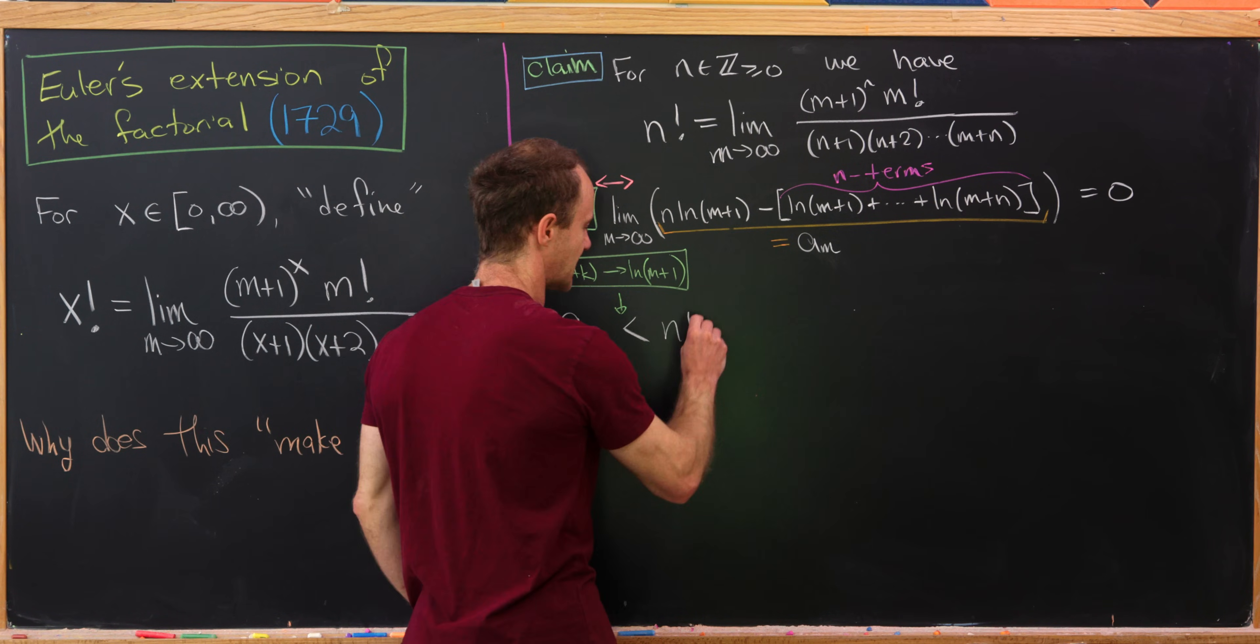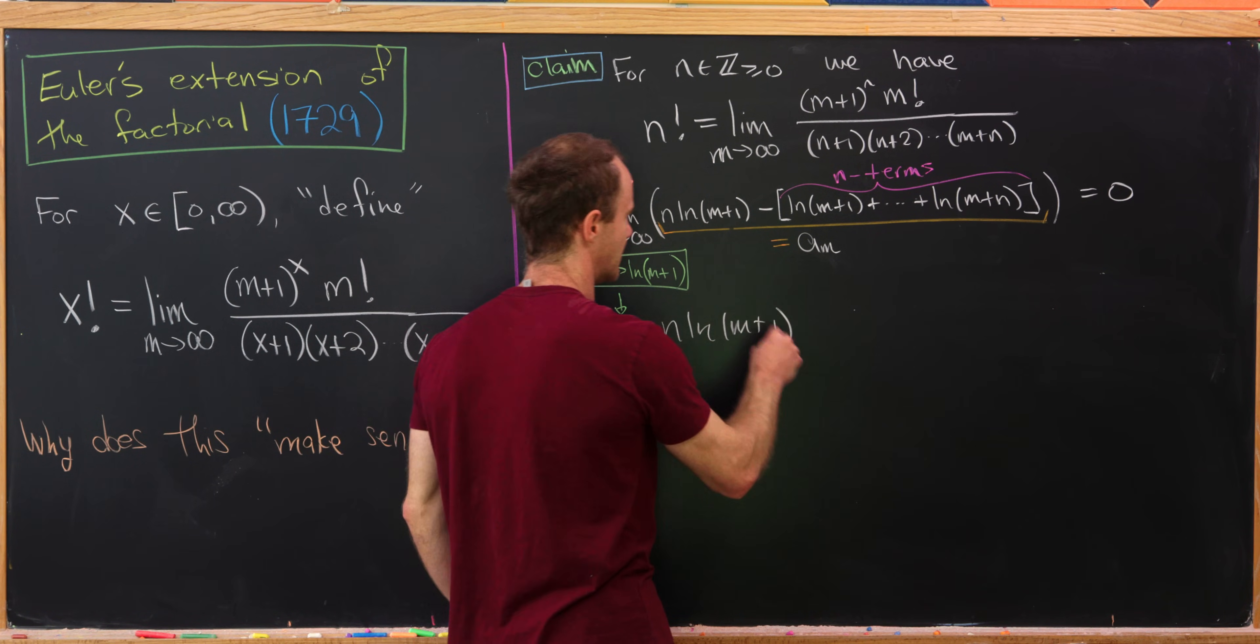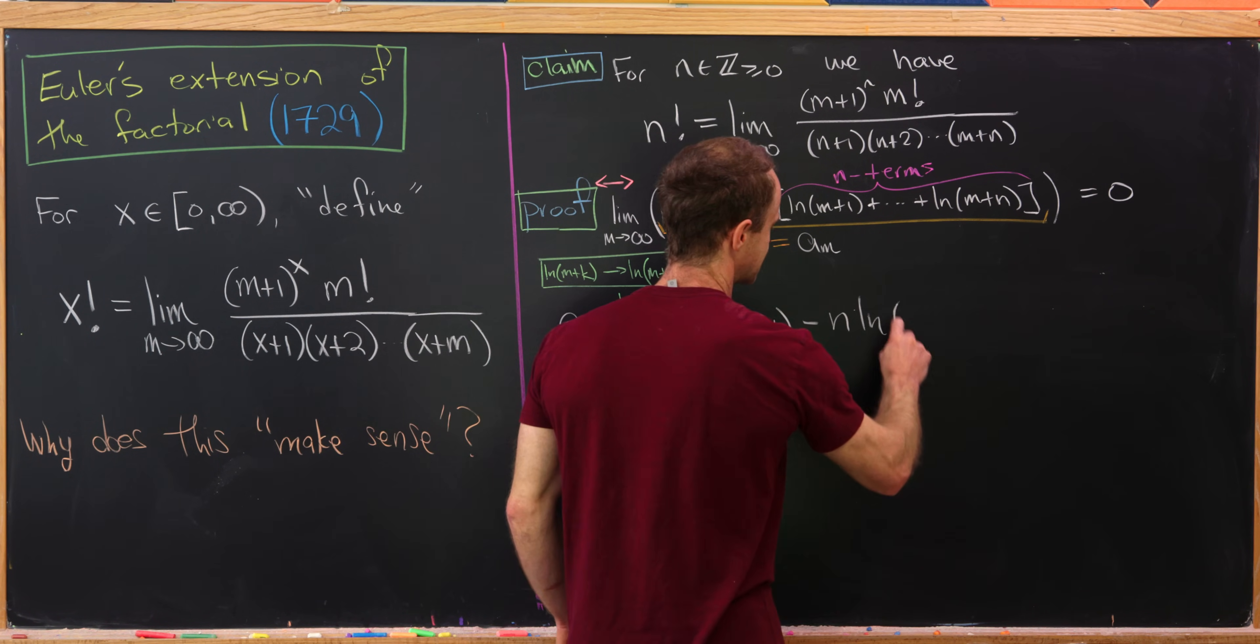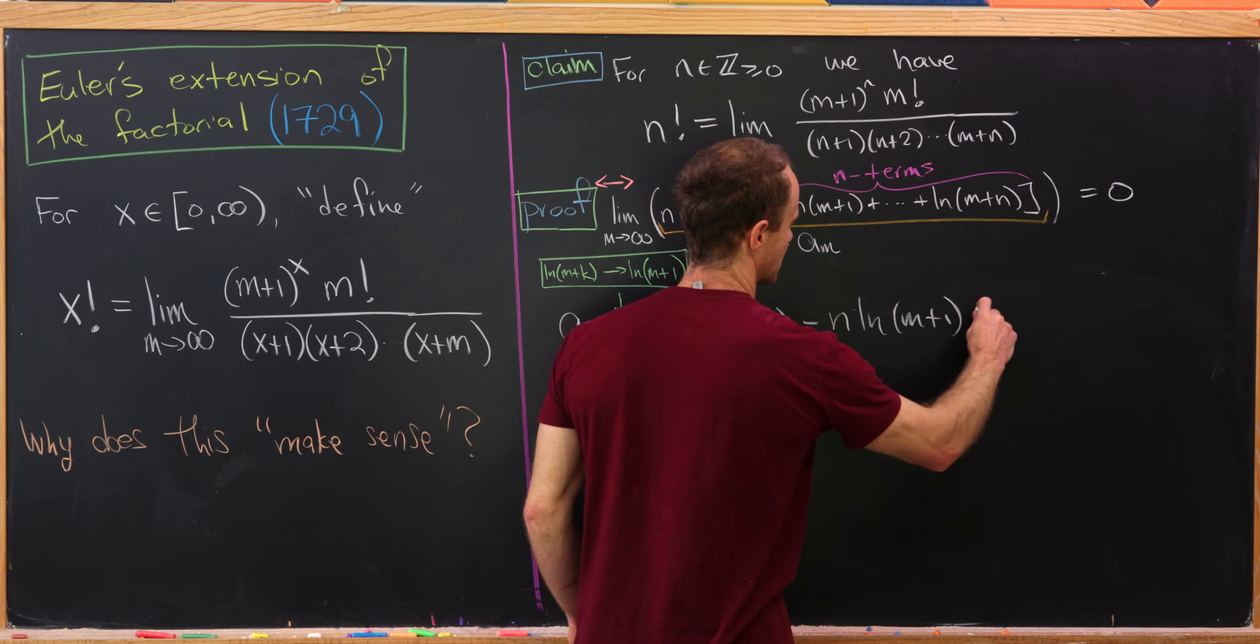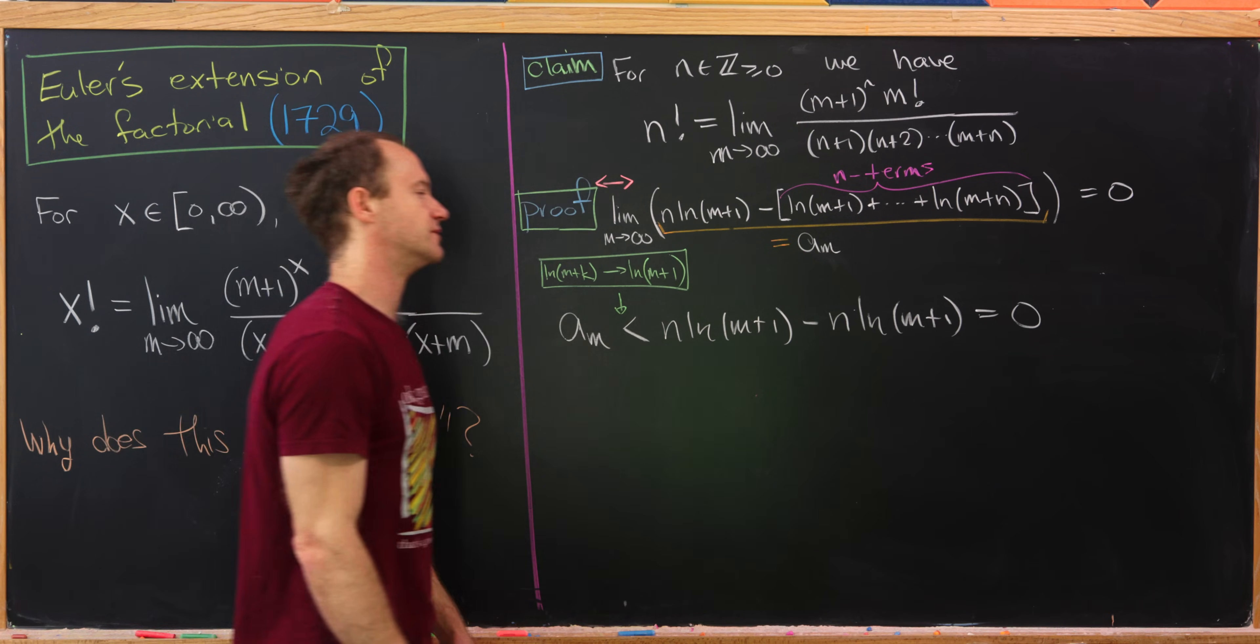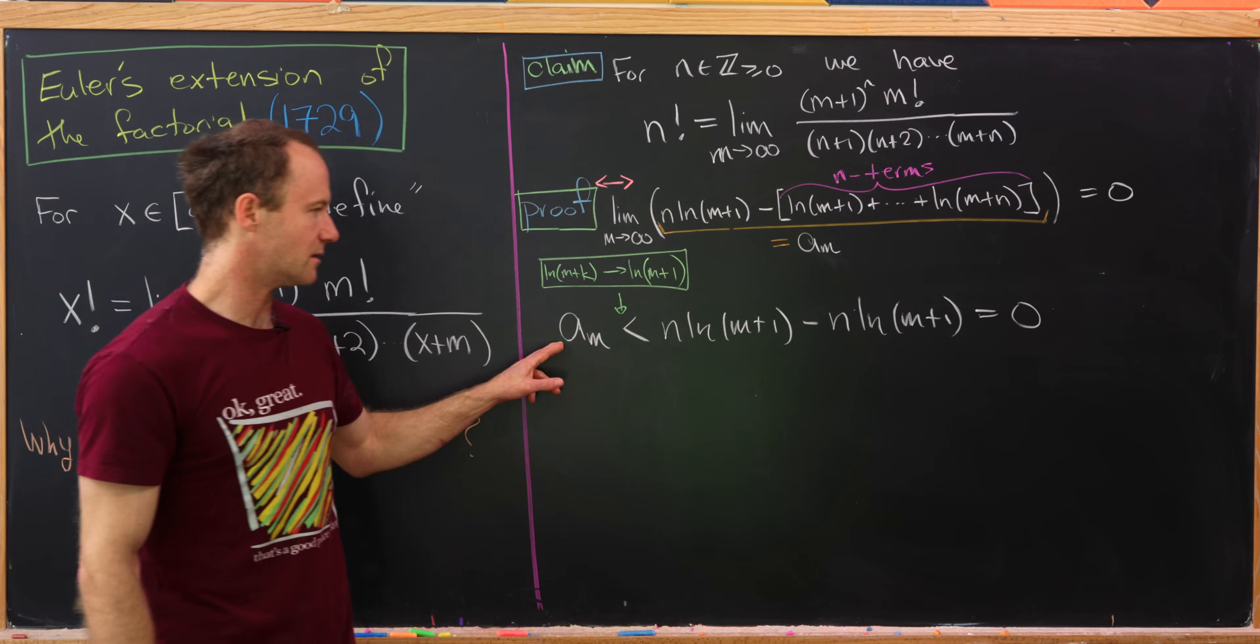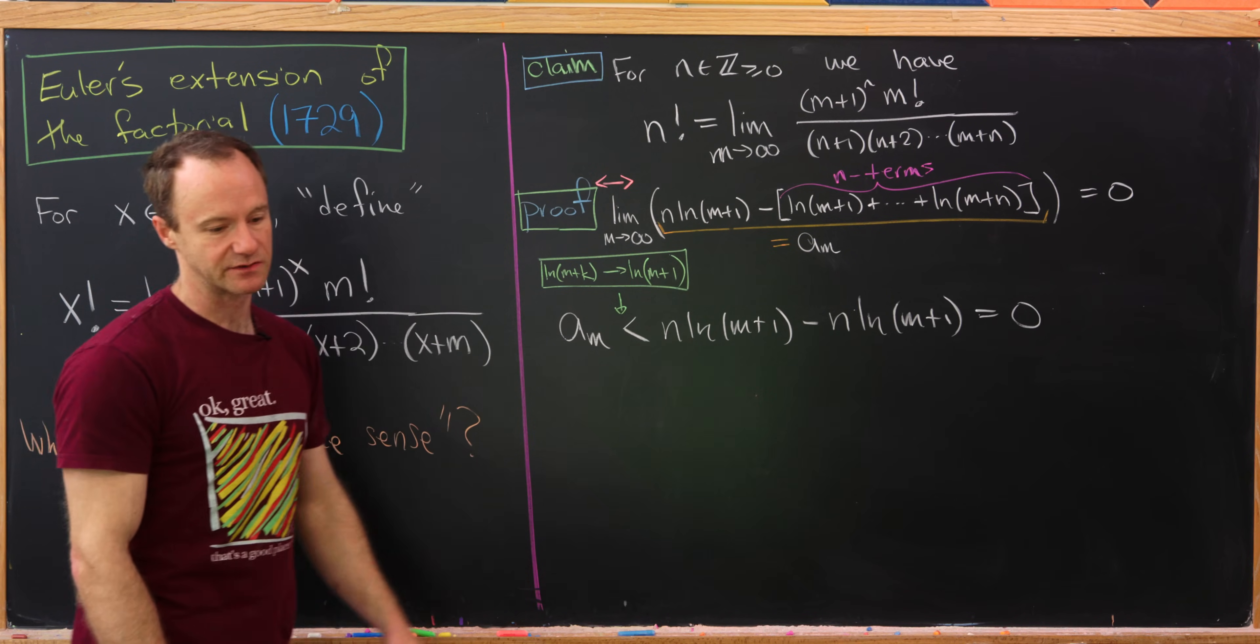So we've got this n times ln(m+1) that comes down from right there, and then minus n times ln(m+1). So that's clearly equal to zero. Okay, so we've bound a_m above by zero. Now we'd like to bound it below by something, and we'll do a similar trick here.